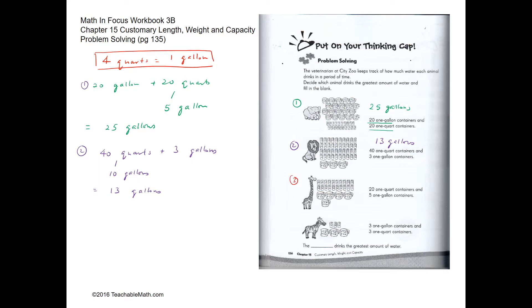For the third part, we have 20 quarts and 5 gallons. 20 quarts would be 5 gallons. So this would be 10 gallons together.